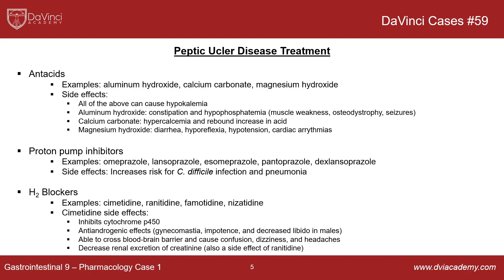This slide gives an overview of peptic ulcer disease treatment. Antacids are often over-the-counter — in this case, the patient tried those and they didn't work. Examples include aluminum hydroxide, calcium carbonate, and magnesium hydroxide. These all contain anions such as hydroxide and carbonate that bind to the acid and neutralize it. Side effects: all of the above can cause hypokalemia. Aluminum hydroxide specifically can cause constipation and hypophosphatemia. Hypophosphatemia can affect muscle contraction, causing muscle weakness, and since phosphate is a key component of bone structure, it can cause osteodystrophy and also CNS dysfunction and seizures.